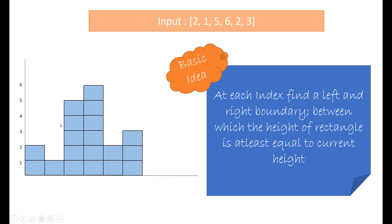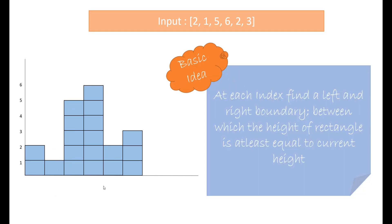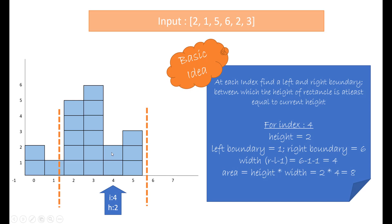So if I take the index as 2, I want to find out a left boundary and a right boundary between which the height is at least the height of this particular index, which is 5. So the left boundary and the right boundary will come over here and here. Let's take an example of index 4. Index 4 has a height of 2. If we go left to see where we get a height that is less than this height, it is index 1. So that becomes our left boundary.